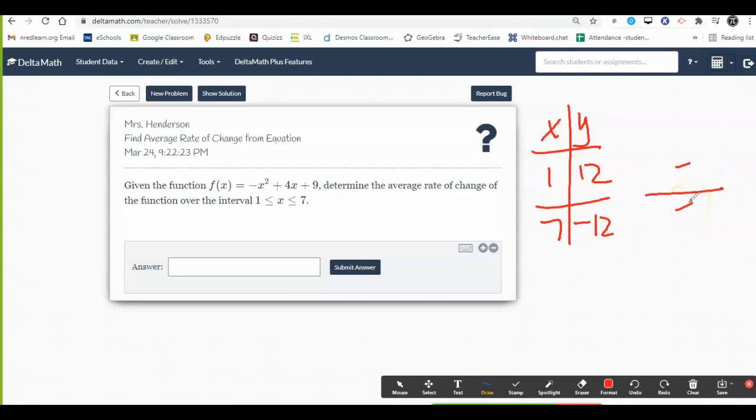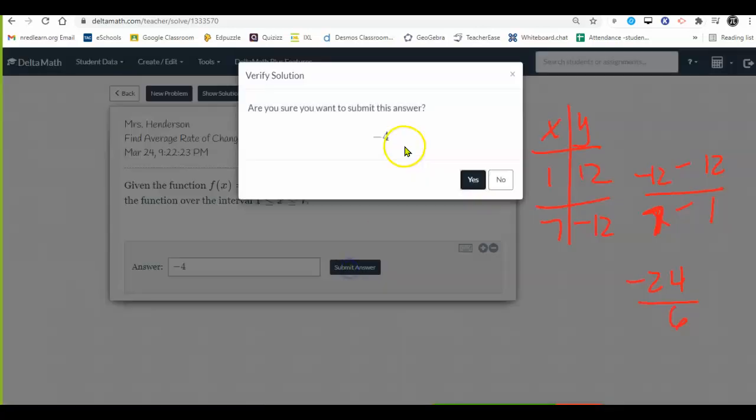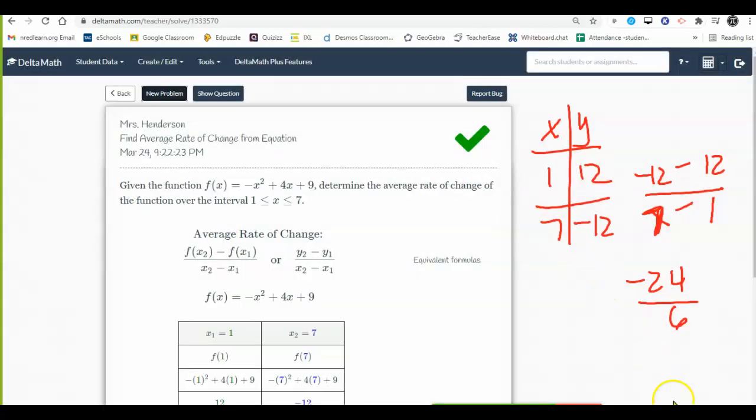Set up my slope fraction here. Negative 24, y2 minus y1 over x2, 7, minus x1. And it looks like I'm going to get negative 24 over 6, also known as negative 4. Fantastic.